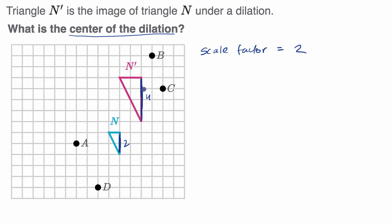Now what about our center of dilation? So one way to think about it is pick two corresponding points. So let's say we pick this point and this point. The image, the corresponding point on N prime, is going to be the scale factor as far away from our center of dilation as the original point.